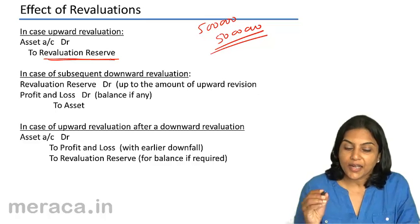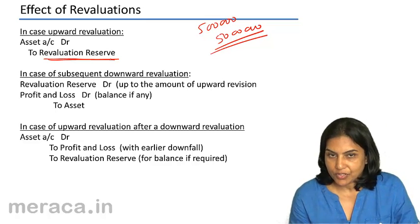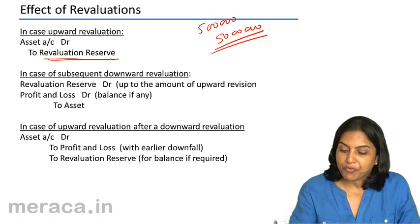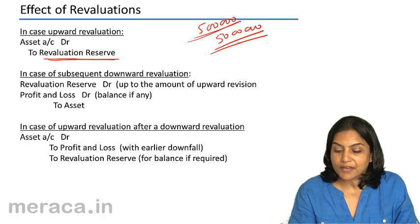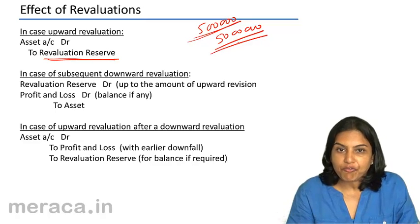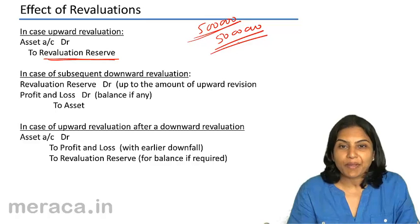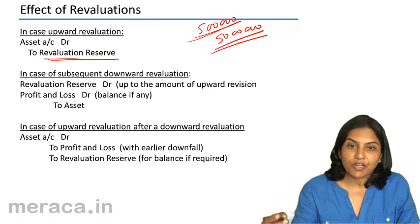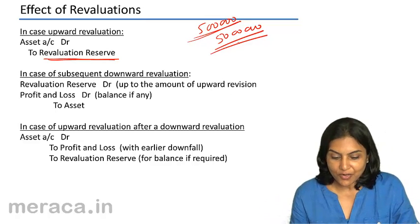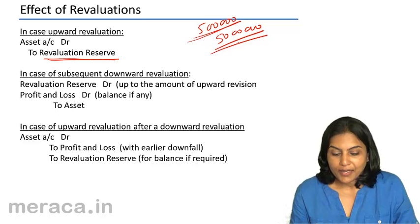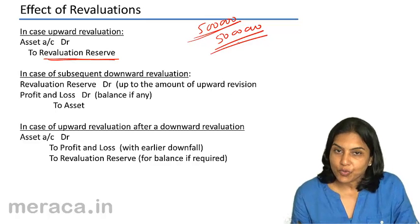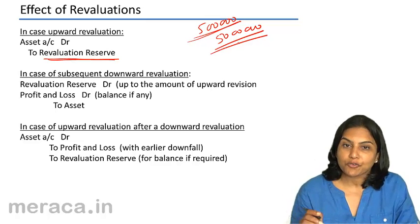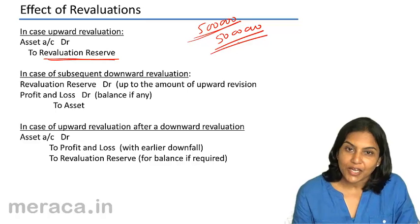It is not taken to profit and loss account. In this particular example, if we were going to increase the value of our building to 50 lakhs — increase it by 45 lakhs — it would not be correct to take this 45 lakhs to a profit and loss account. That would show a wrong picture of the profits. It is instead kept in a revaluation reserve. It is a part of the reserves, a part of the equity.